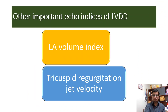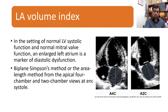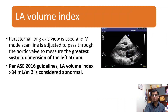Two more important indices of LV diastolic dysfunction. In the setting of normal LV systolic function and normal mitral valve function, an enlarged left atrium is a marker of diastolic dysfunction. Whether the LA is enlarged can be assessed on the parasternal long axis view and also on apical 4-chamber and apical 2-chamber views using the Simpson method. M-mode is adjusted to pass through the aortic wall to measure the greatest systolic dimension of the left atrium.